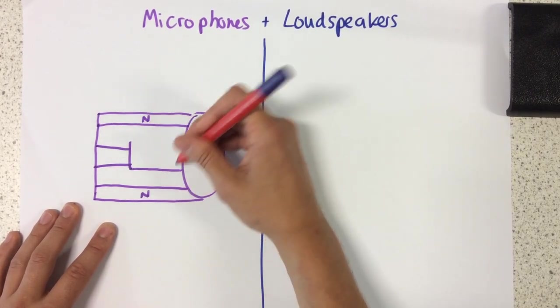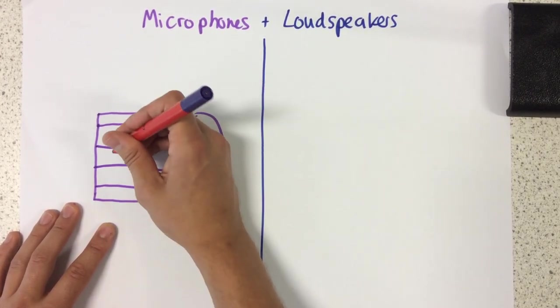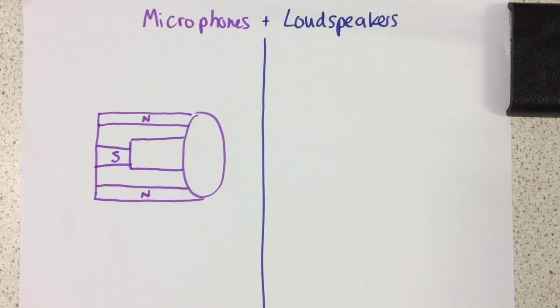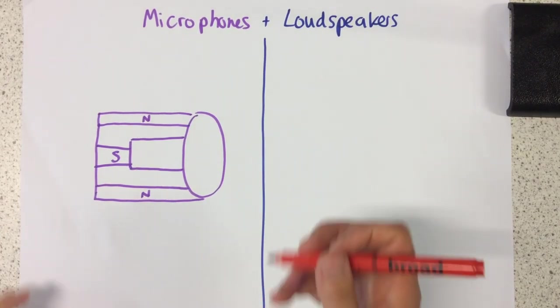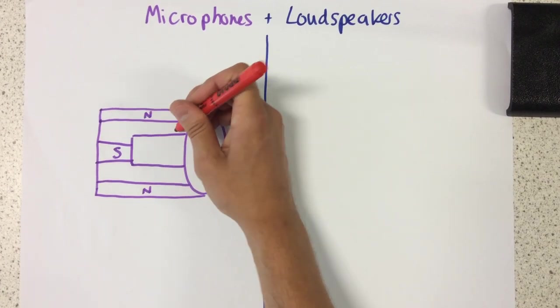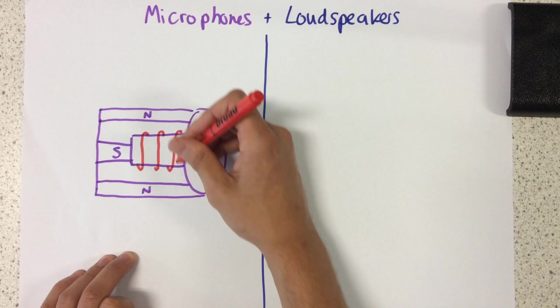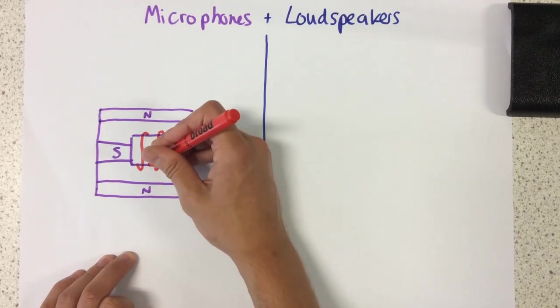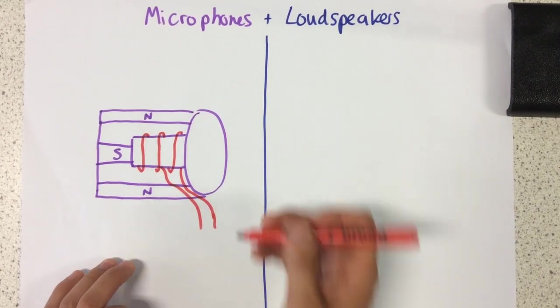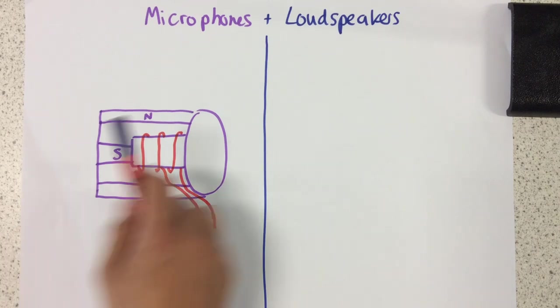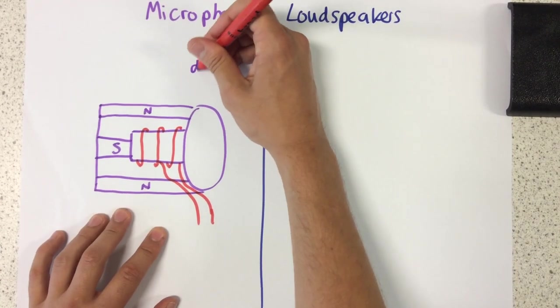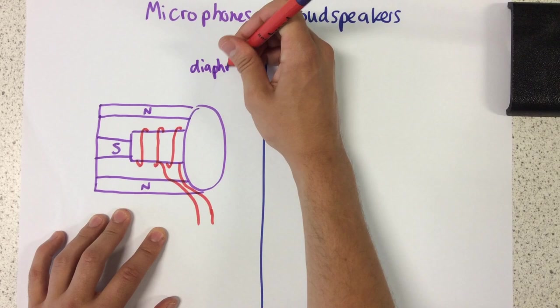That current can then be amplified. This is what the inside of my microphone looks like. Right now I'm drawing in red which is showing the coils of wire. This part here, this part of the microphone here is called the diaphragm.